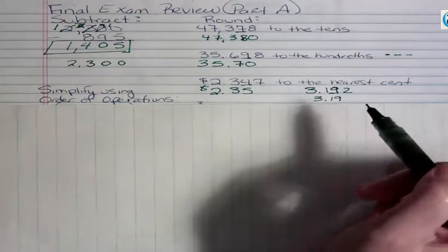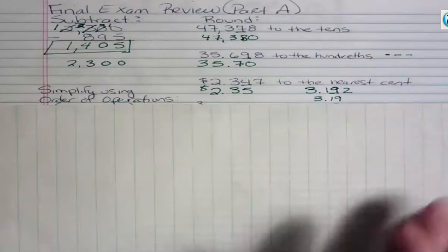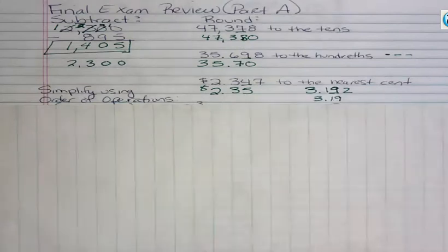So if it's 5 or more, go up. If it's less than 5, you stay the same. You don't drop down, but you stay the same.